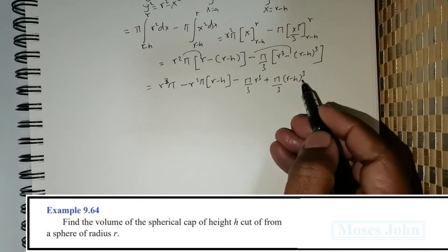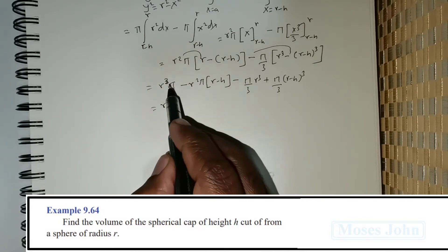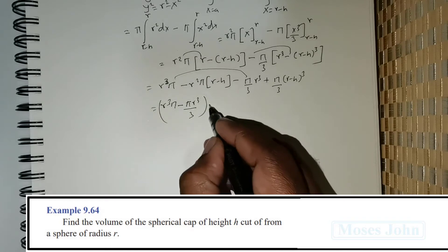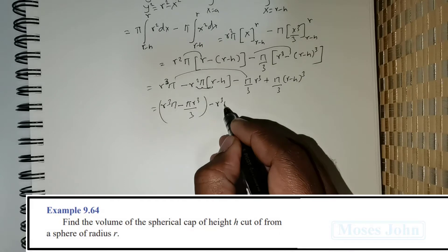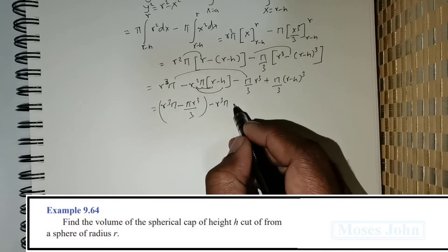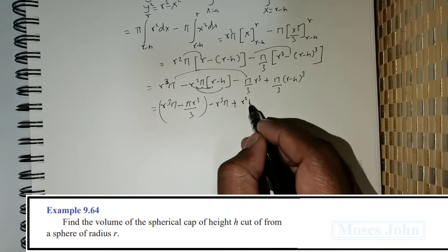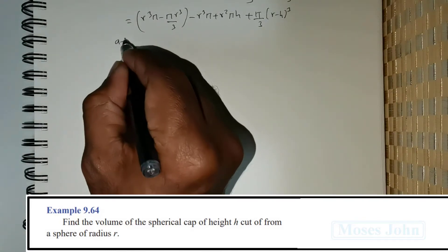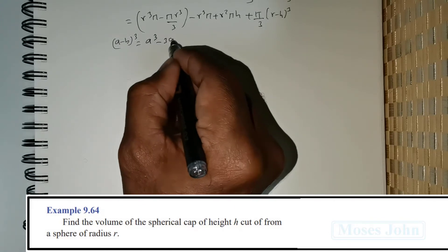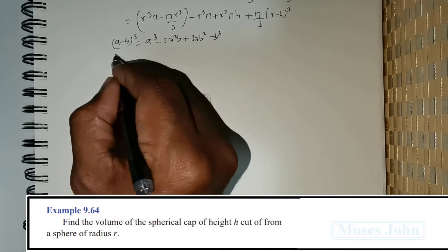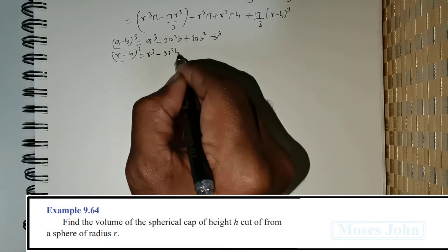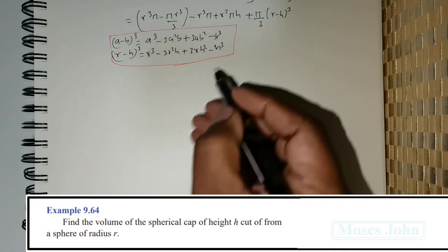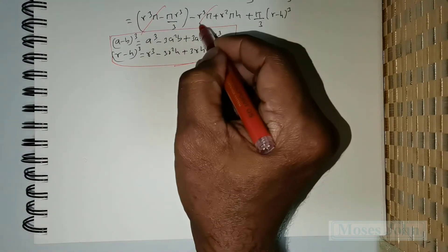Now we expand and simplify. We have r³π clubbed with πr³/3, giving πr³ − πr³/3. There is also −πr²h with a negative sign, which becomes +πr²h. To expand (r − h)³ we use the identity (a − b)³ = a³ − 3a²b + 3ab² − b³, giving r³ − 3r²h + 3rh² − h³. The r³π and −r³π terms cancel.